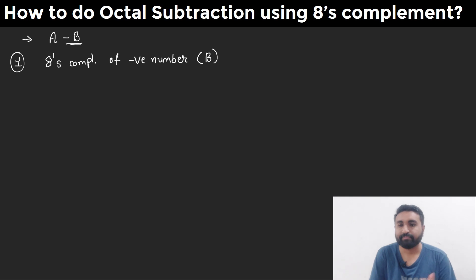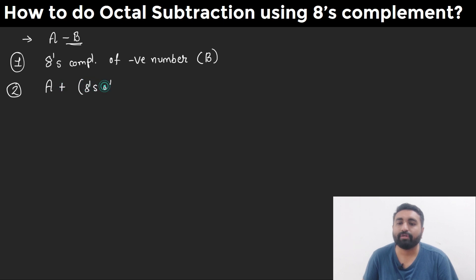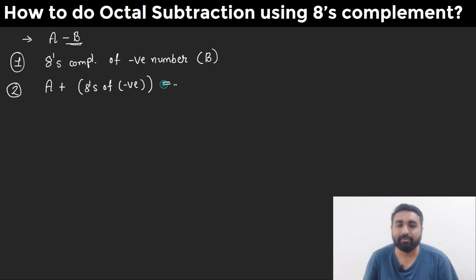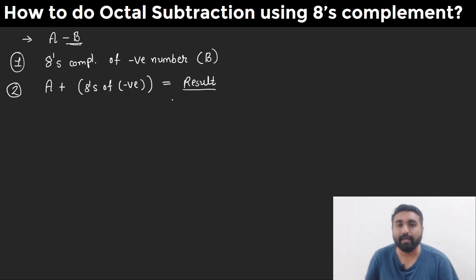So for B, we need to find the 8's complement. Then, after finding the 8's complement, the second step is to add A and the 8's complement of the negative number B. After adding, we will get some result of the addition.